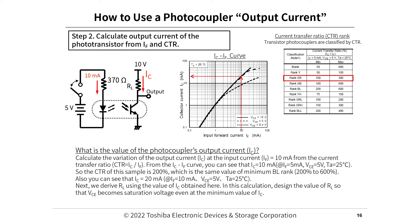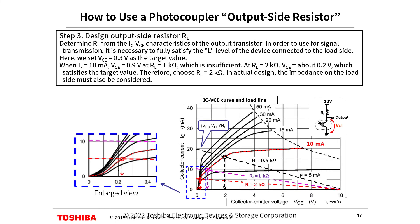Step 3: Design the output-side resistor RL. Determine RL from the IC–VCE characteristics of the output transistor. To use for signal transmission, it is necessary to fully satisfy the L-level of the device connected to the load side. Setting the target value VCE = 0.3V: at IF = 10 mA, with RL = 1 kΩ, VCE = 0.9V, which is insufficient. At RL = 2 kΩ, VCE ≈ 0.2V, which satisfies the target. Therefore, choose RL = 2 kΩ. In actual design, the impedance on the load side must also be considered.